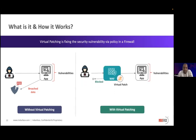Now with WAF in place, what happens? WAF comes in line to the traffic from the internet to your application. So all the traffic over the internet comes through WAF, WAF inspects it, and sends the traffic back to your application. So now when a hacker probes, when he tries to probe for a vulnerability, that traffic goes through WAF. Now the WAF knows that he is probing for a vulnerability and trying to exploit it.